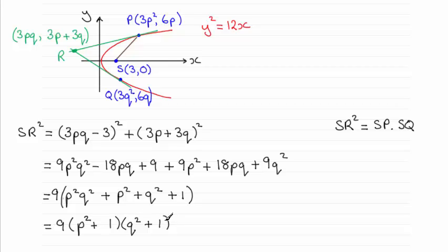So that's SR squared. Now in the earlier part, part A of this question, we were told to work out what SP was. Show that SP equaled this result, 3 times all of 1 plus P squared.